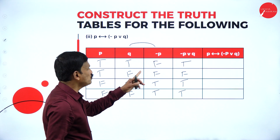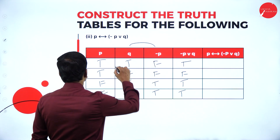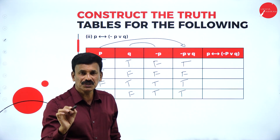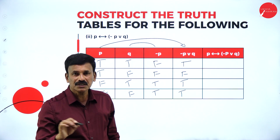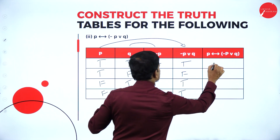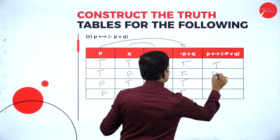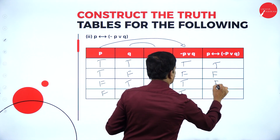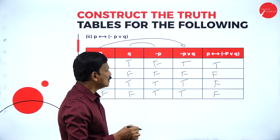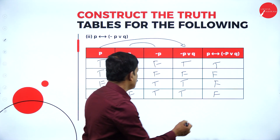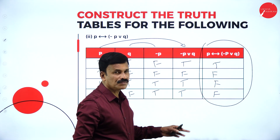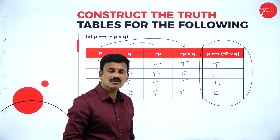These two are connected by biconditional — P and negation P disjunction Q. In case of biconditional, true and true is true, false and false is also true; in other two cases it is false. So: T and T is T, T and F is F, F and T is F, F and T is F. The truth values are T, F, F, F. This is neither a tautology nor a contradiction.